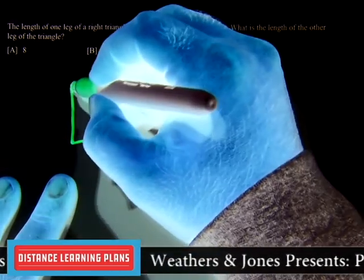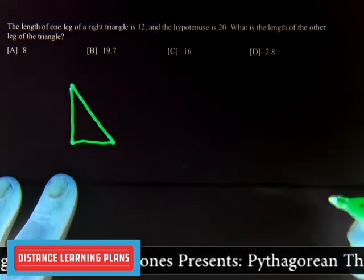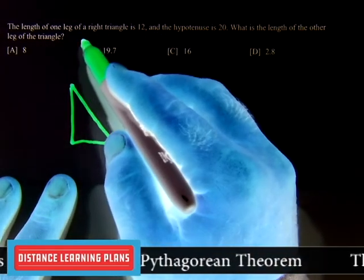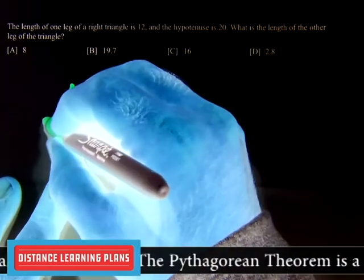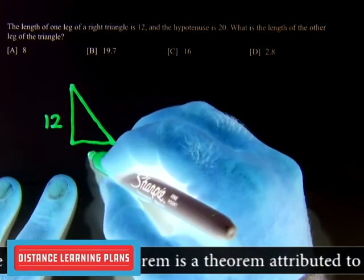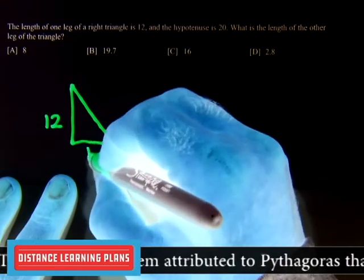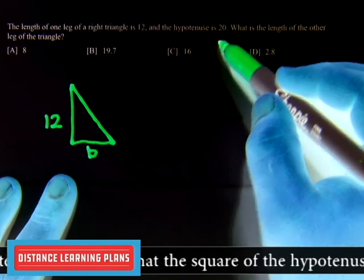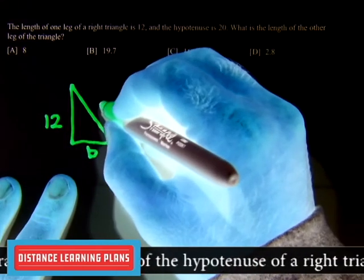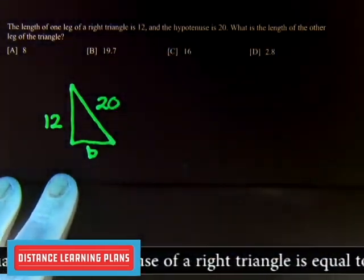So if we'll draw our triangle, we know that one leg is 12, so it could be A or B, either one. I'm going to put 12 here, and we don't know our other leg, so I'm going to label it B. And it said our hypotenuse is 20, which is always C.